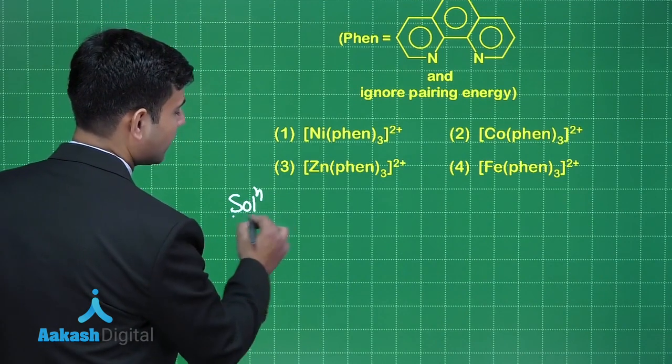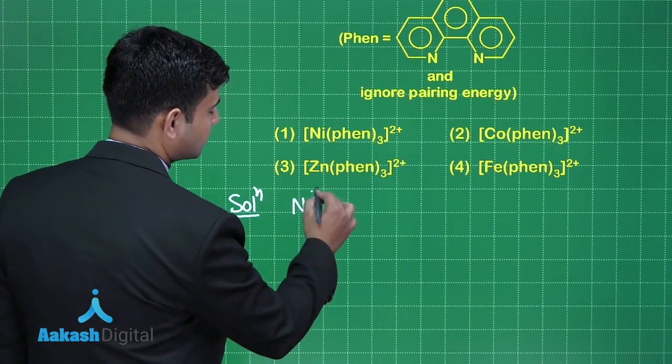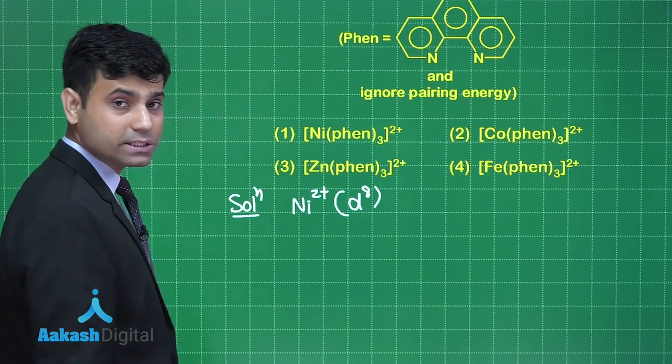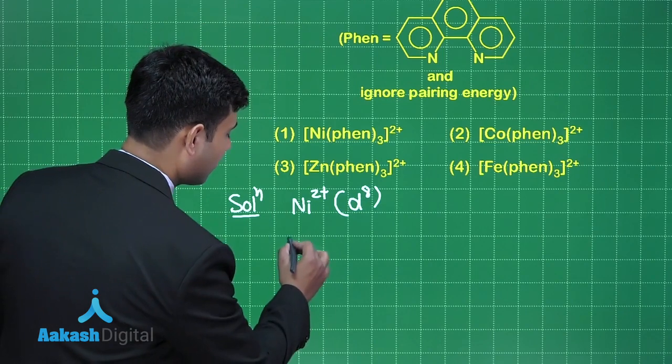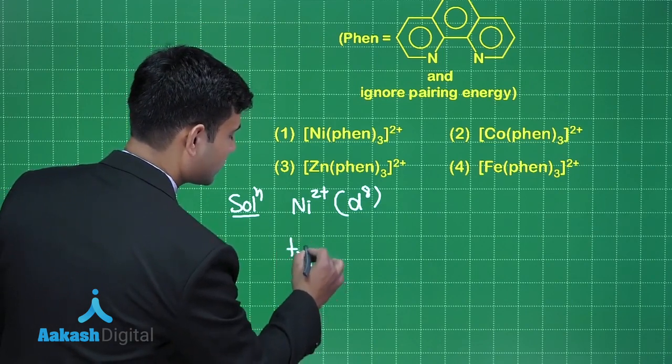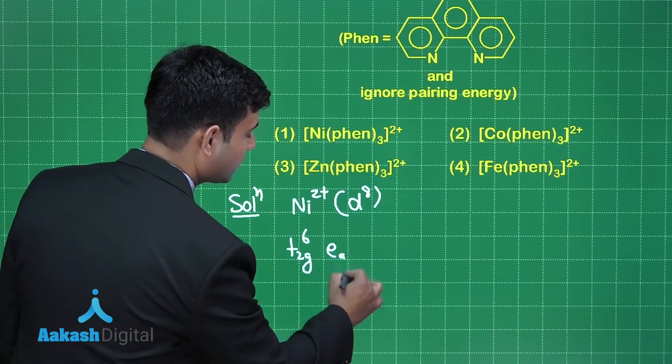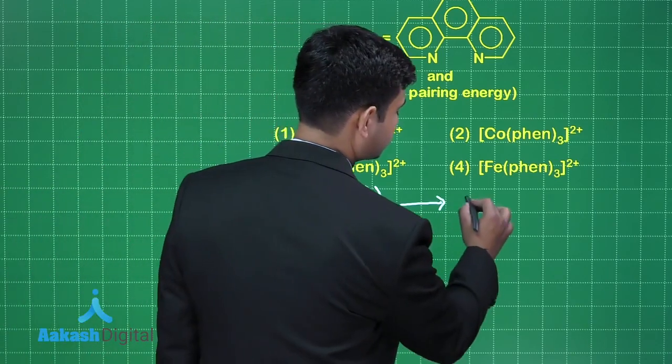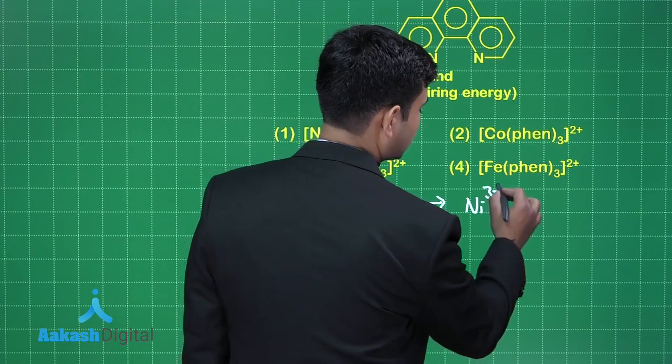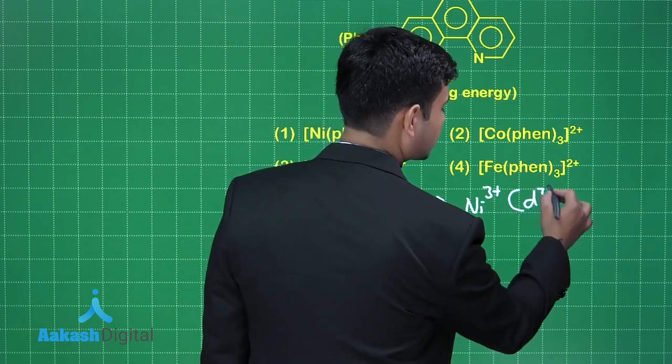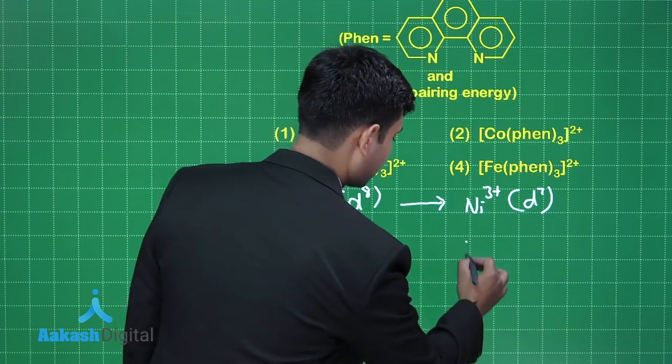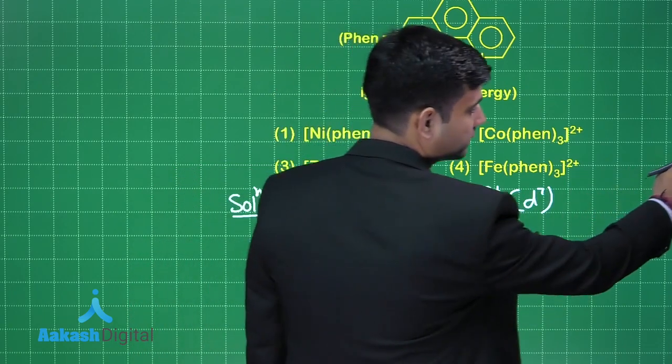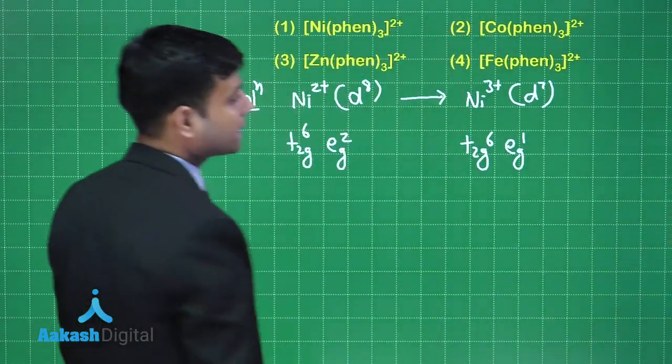First of all we have Ni2+. Ni2+ has d8 configuration, so d8 configuration means it will have t2g6 eg2. Now if it oxidizes to Ni3+ it will have d7 configuration which is t2g6 eg1.